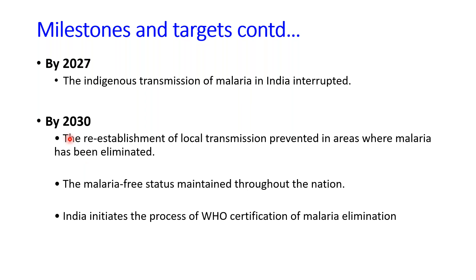By 2030, the reestablishment of local transmission is to be prevented in areas where malaria has been eliminated, and malaria-free status maintained throughout the nation. If everything goes as per plan and targets, India will be initiating the process of WHO certification for malaria elimination.